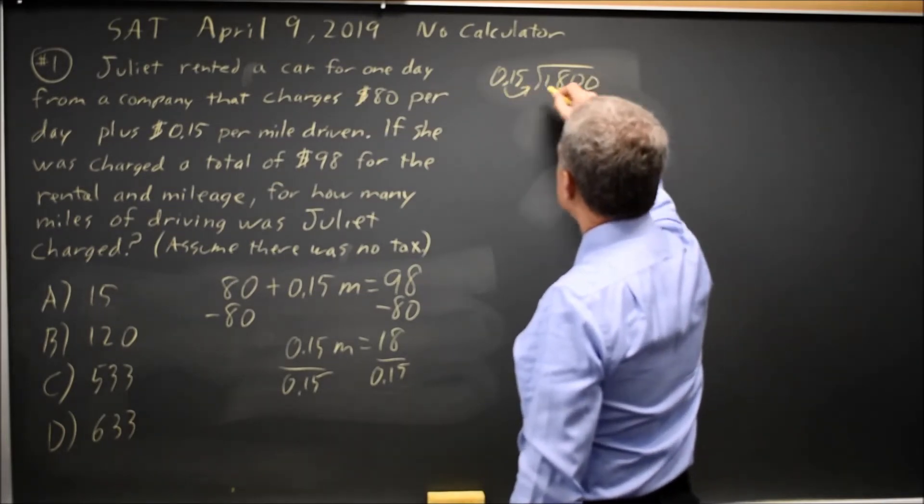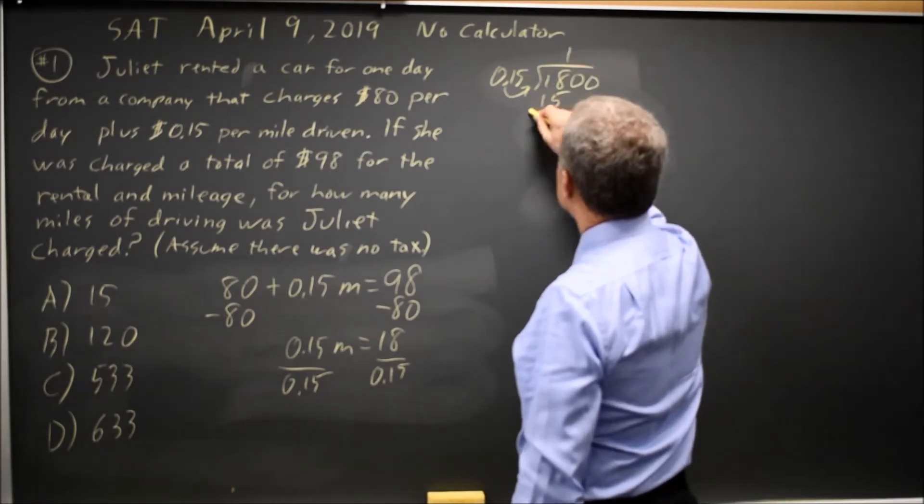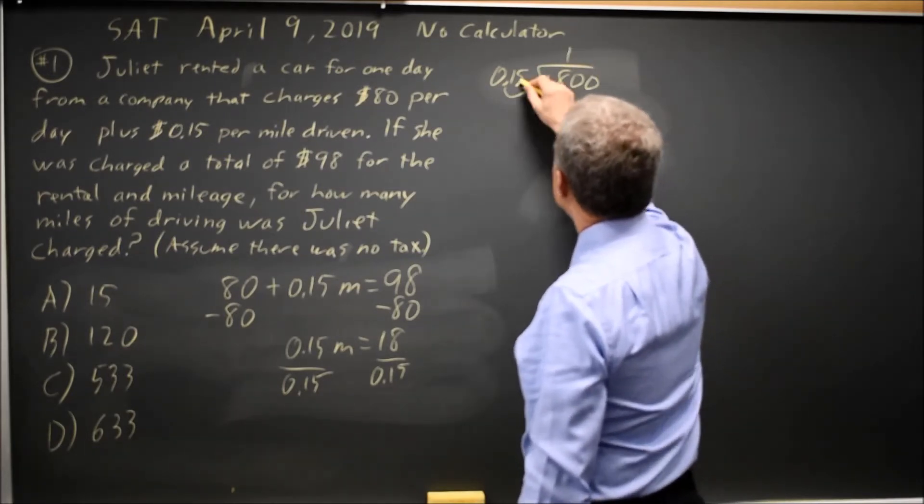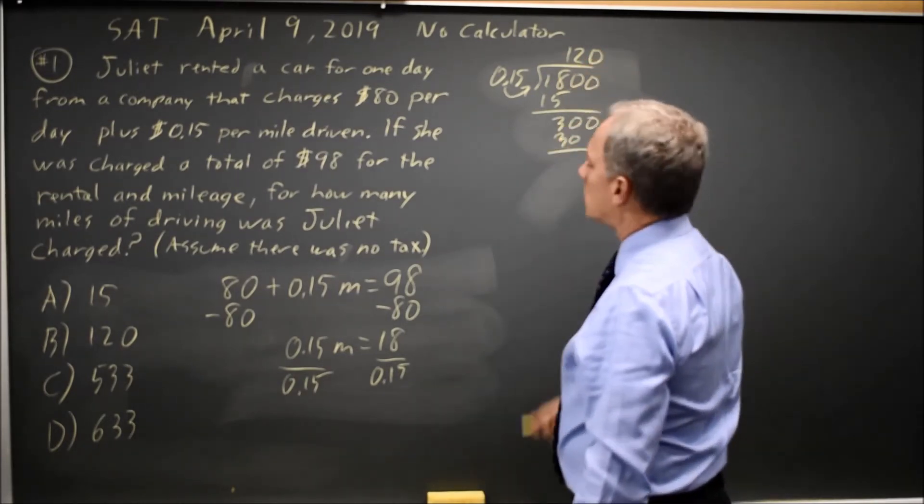move the decimal, write 2, is 15 into 1800, that goes once, leaving 300. 15 goes twice into 30, leaving 0, 120.